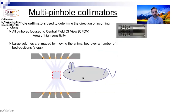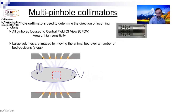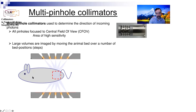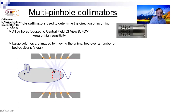For small animal imaging, you would have the bed of the mouse, rat, or small animal move. Because this is the focal area, everything focuses on a particular region. If you want to do whole body imaging, you would have to move the bed. But when you have multiple pinholes, you do have better sensitivity and can get very, very good resolution.